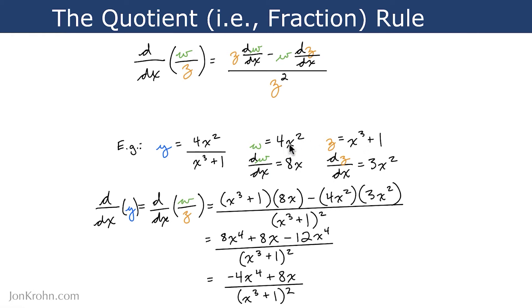So 4x squared, according to the power rule as well as the constant multiple rule, becomes 8x, because x squared becomes x to the power of 1, which is x. The 2 comes in front of the x. 2 times 4 is 8.